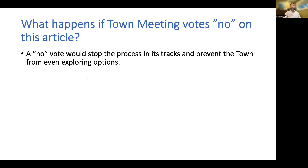So what would happen if town meeting voted no on this article? A no vote stops the process in its tracks. The town would not be able to investigate or even look into a CEA, and this would block one of the best tools the town has for reducing its greenhouse gas emissions and providing more predictable energy bills for consumers.